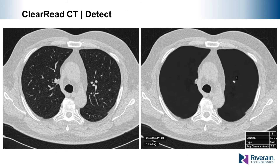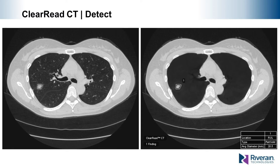ClearRead CT Detect builds on vessel suppression, providing automatic nodule detection and segmentation. The nodule is segmented in three dimensions, providing volume measurements as well as linear measurements in the axial plane, the location of the nodule within the exam, and the type of nodule: solid, part solid, or ground glass. In the case of a part-solid nodule, ClearRead CT Detect will provide measurements of not only the entire nodule but the solid component as well. These measurements are displayed in detail on a summary report page.